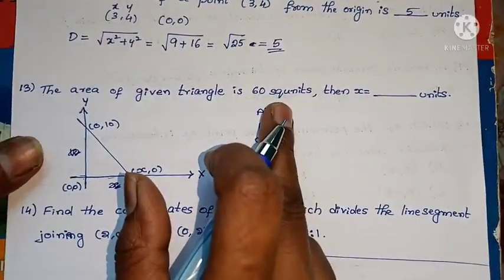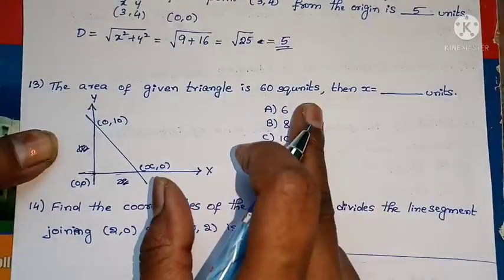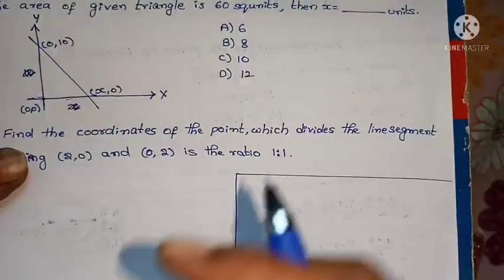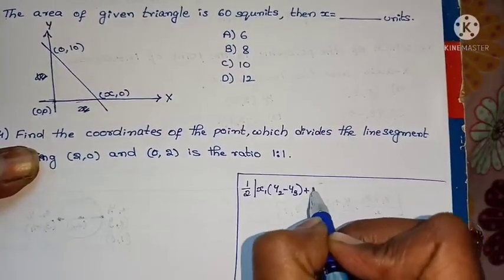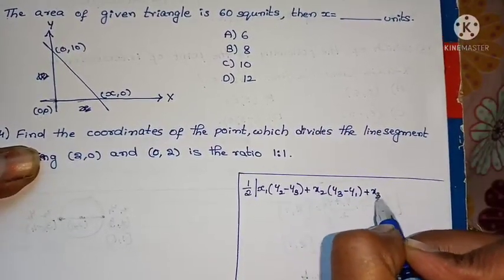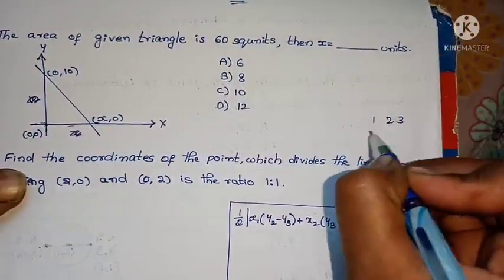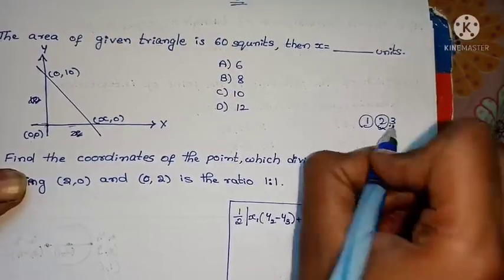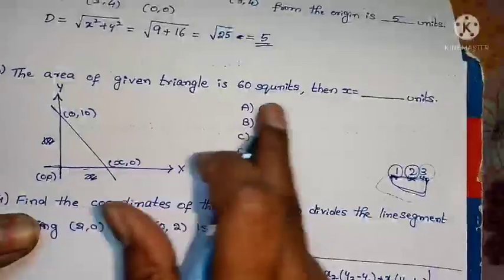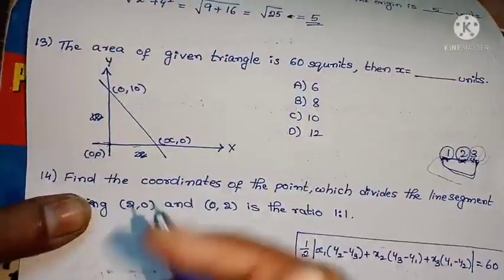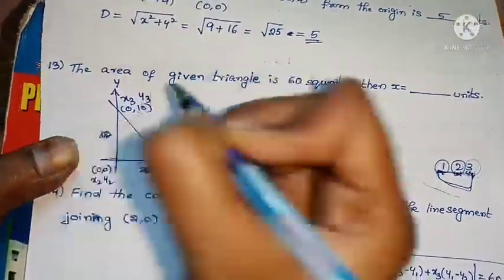Next problem: Area of the given triangle is 60 square units, then x equals how much? Here vertices are given: (0,0), (x,0), (0,10). When three vertices are given, we need to find x value. Area of triangle when vertices are given, what's the formula? Half mod of x1(y2-y3) + x2(y3-y1) + x3(y1-y2).